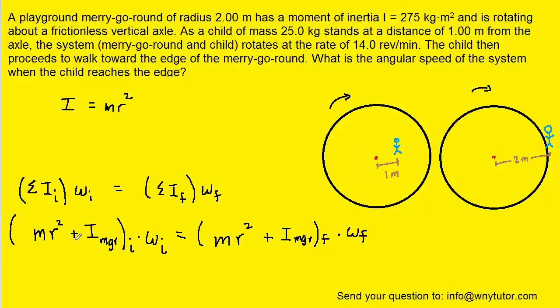And so we're about to plug in but one thing we want to do is solve the equation for what we're looking for. We're looking for the final angular speed which is represented by omega_f. So we want to divide both sides of the equation by this term in parentheses so that we can isolate omega final.